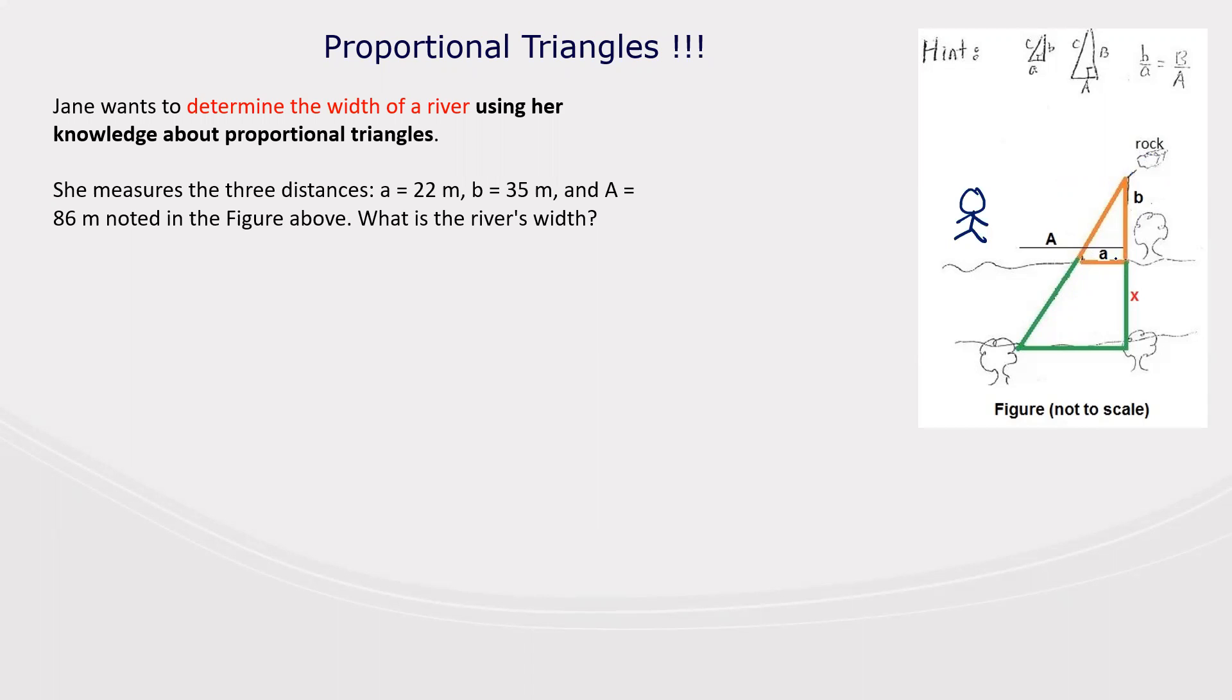Distance b, which is from the rock to the edge of the river. Then standing here, Jane looks to the other side of the river and she sees a tree on the other side, so she imagines a line that goes from the rock to this tree on the other side of the river.